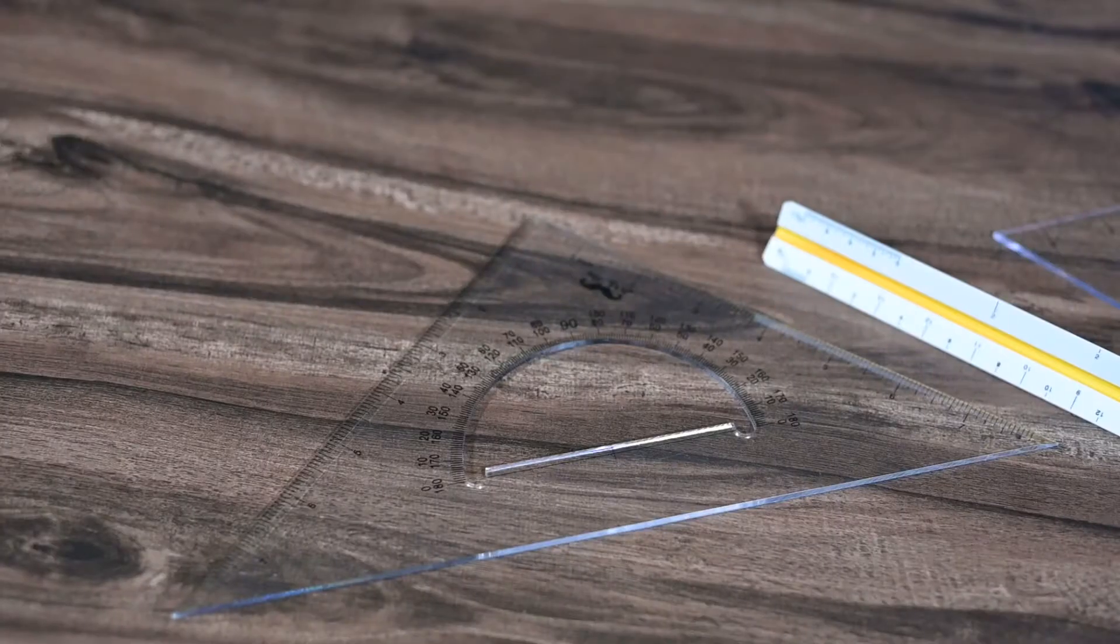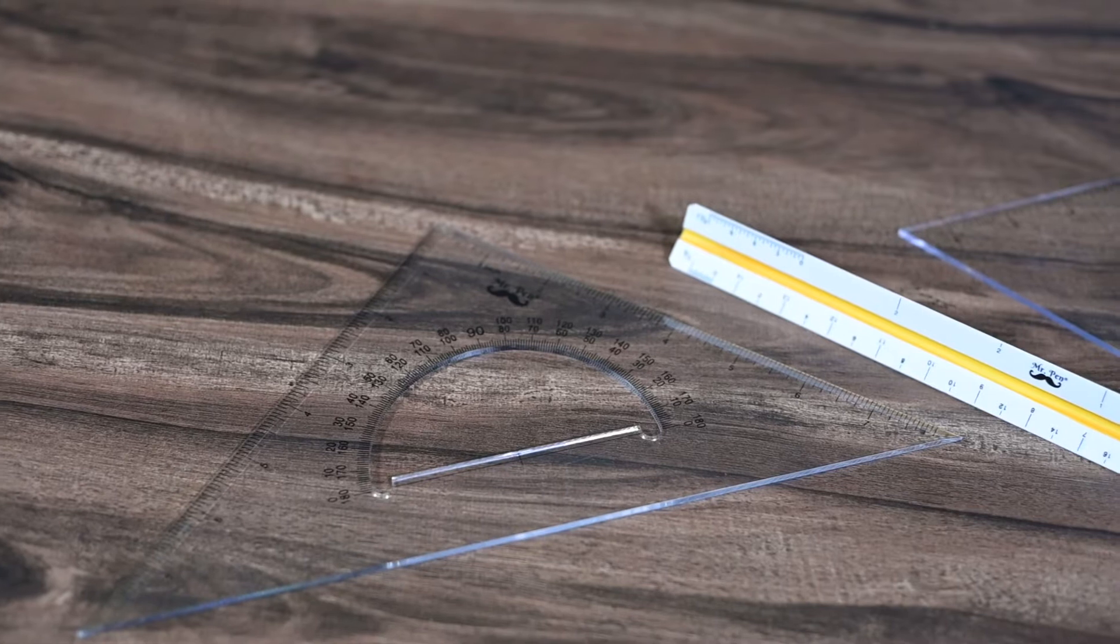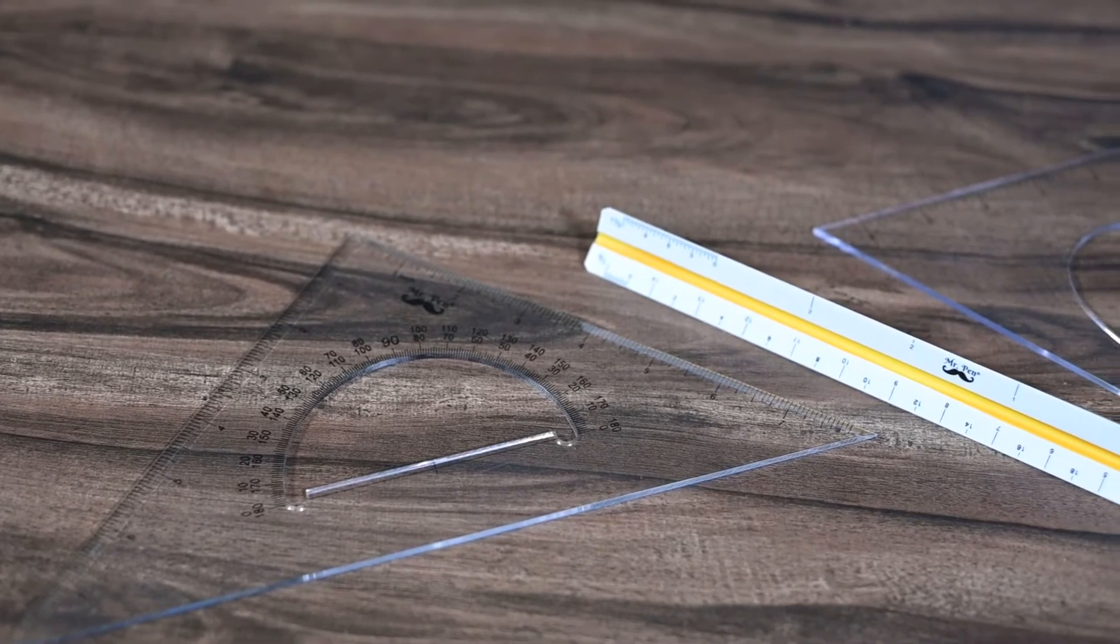Mr. Penn Triangle Set includes a 12 inch architect scale, a 30 by 60 triangle, and a 45 by 90 triangle.